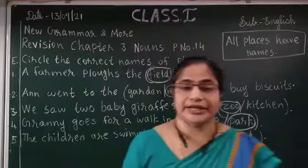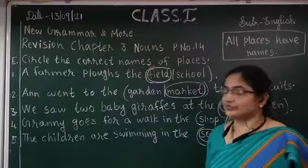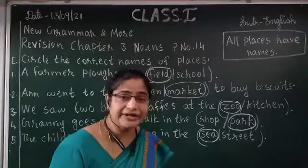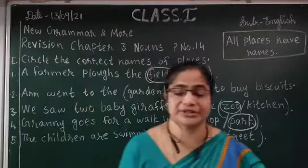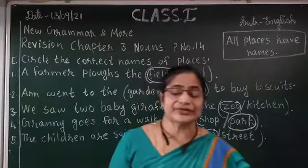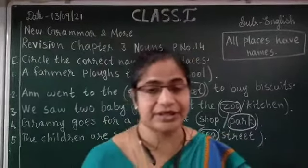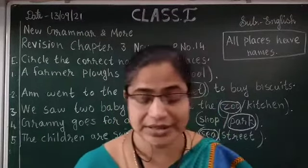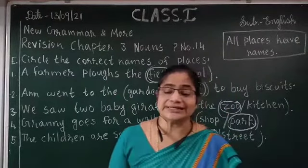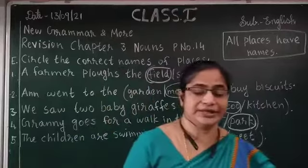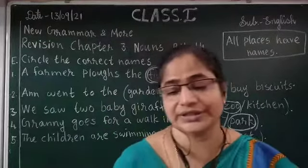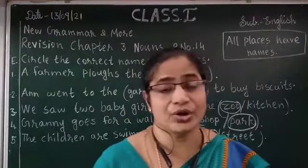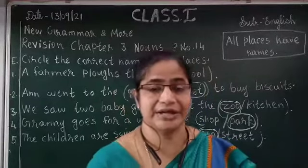These are the names of places. First: a farmer works in the field. Second: Anu went to the market to buy biscuits. Third: we saw two baby giraffes at the zoo. Fourth: Granny goes for a walk in the park. Fifth: the children are swimming in the sea. In our next class, we are going to learn about the category of animals — names of animals.